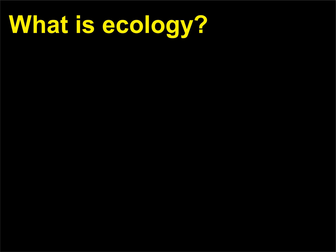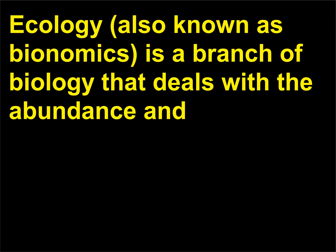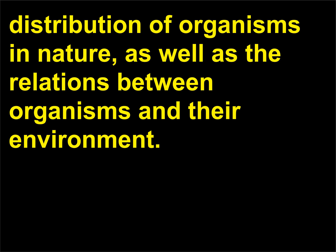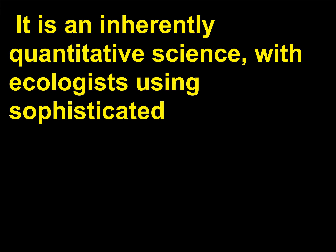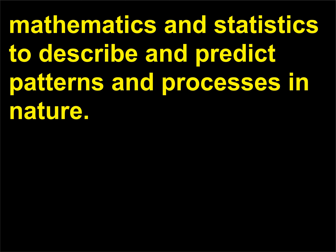What is ecology? Ecology, also known as bionomics, is a branch of biology that deals with the abundance and distribution of organisms in nature, as well as the relations between organisms and their environment. It is an inherently quantitative science, with ecologists using sophisticated mathematics and statistics to describe and predict patterns and processes in nature.